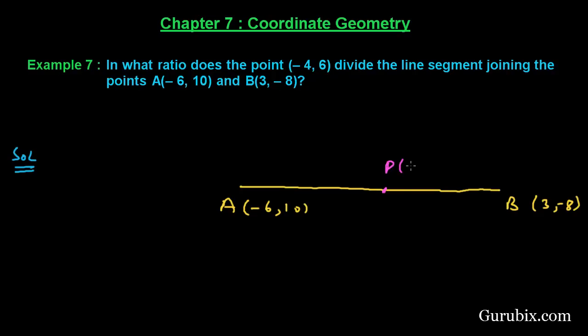And suppose here we have a point P, whose coordinates are (-4, 6). Since we have to find the ratio in which this point P divides the line segment joining the points A and B,